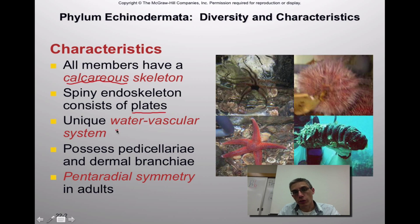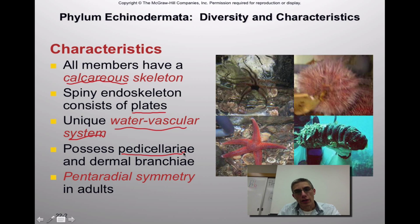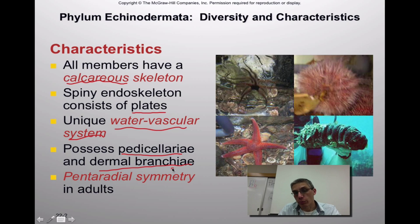Something else that makes this group unique is a water vascular system, used either for locomotion or possibly for feeding. They also possess pedicellaria — very tiny pincer-like claws along the surface of the animal. They also have dermal branchia: 'derm' refers to the skin, and 'branchia' refers to a respiratory structure, so these help the animals breathe.